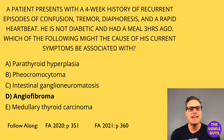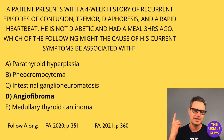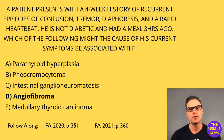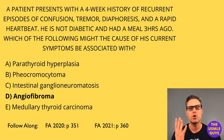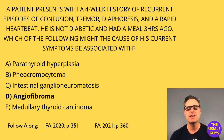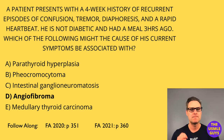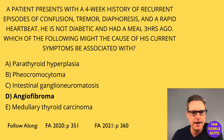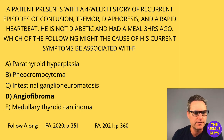MEN2B is associated with pheochromocytoma, medullary thyroid carcinoma, mucosal neuromas, and marfanoid habitus. Just as in MEN2A, this is associated with the RET oncogene. All right, let's end this lecture here — we'll see you back for the next lecture in a few minutes.